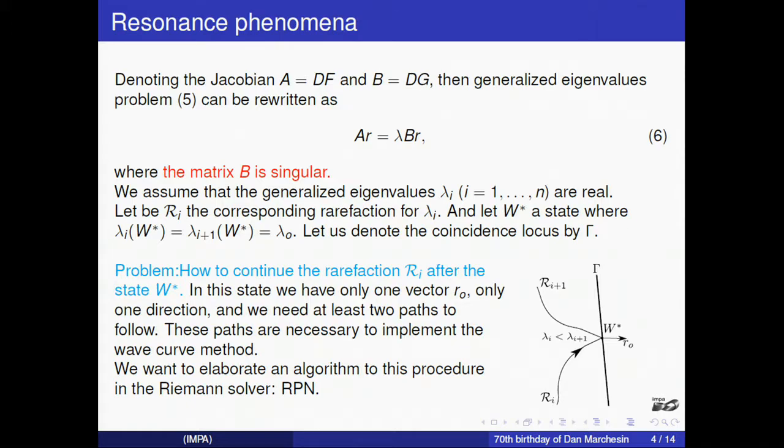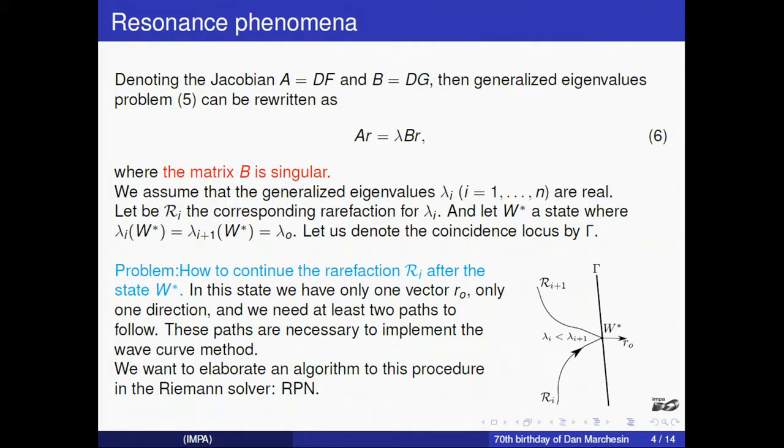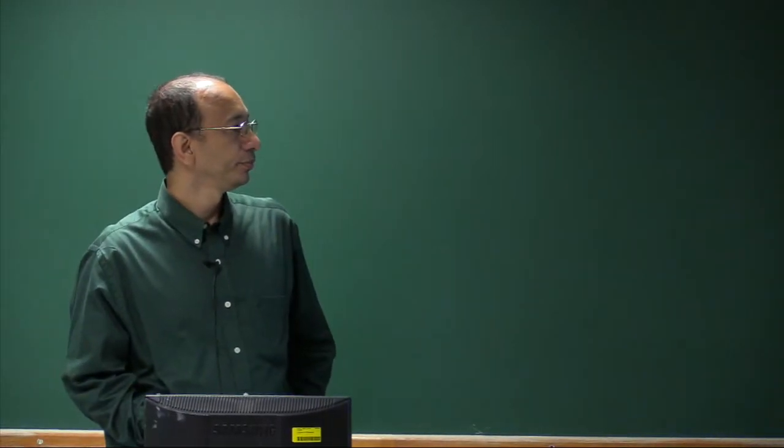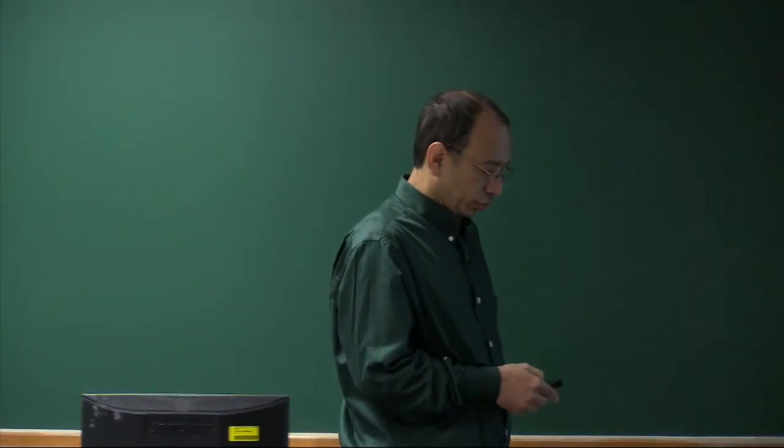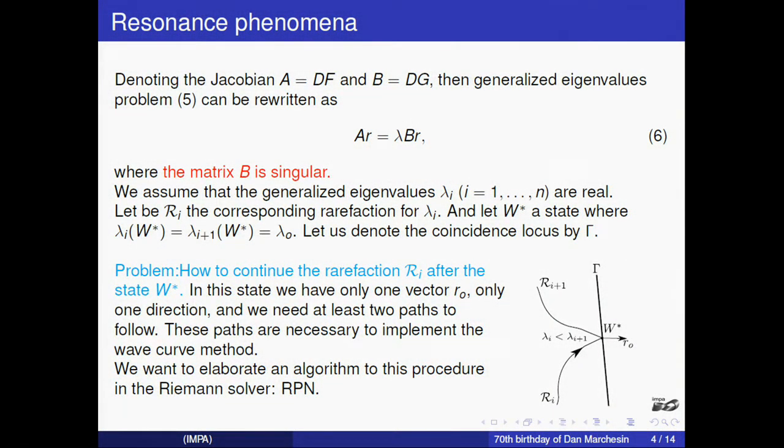If A is the Jacobian of the wave and B is the Jacobian of the accumulation, to find the rarefaction we need to solve this generalized eigenvalue problem. But in this case, as the matrix B does not depend on u, the matrix B is singular because we have one column that is zero. But we assume that the eigenvalues λ_i are real.